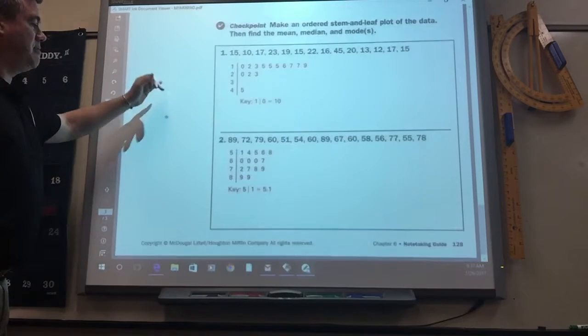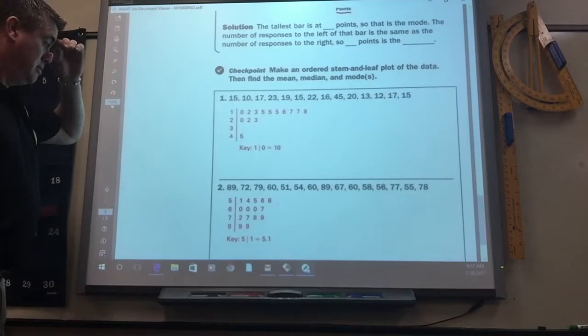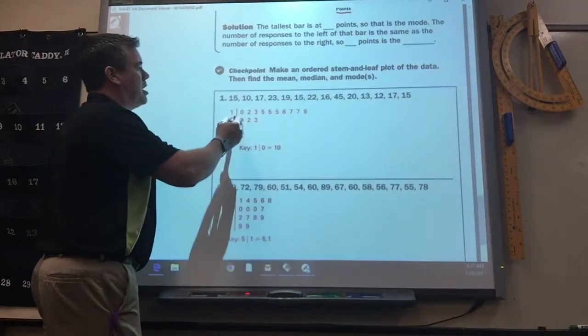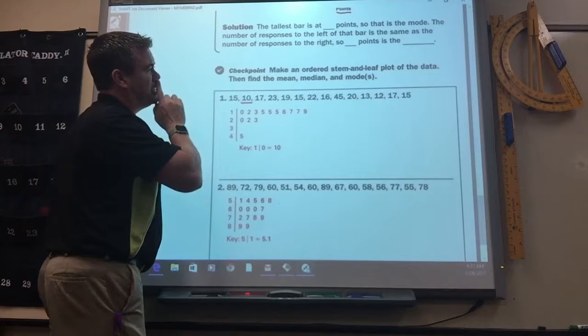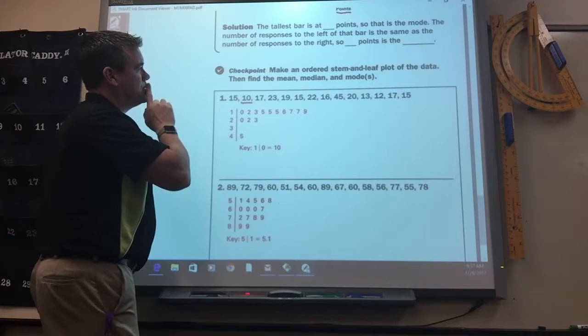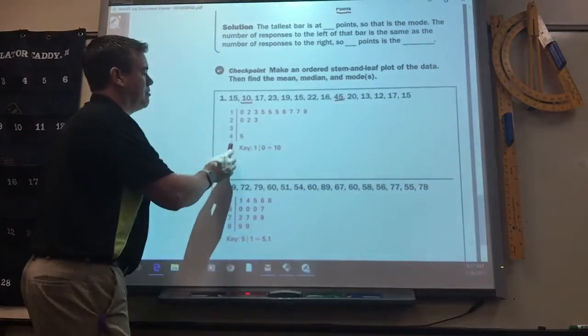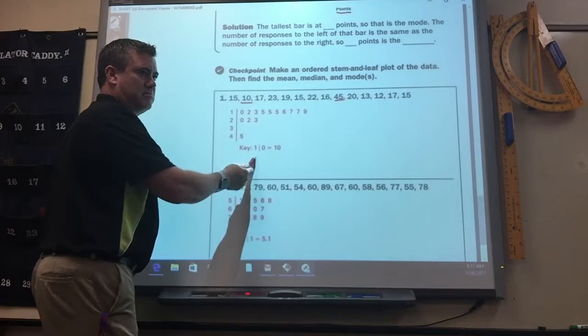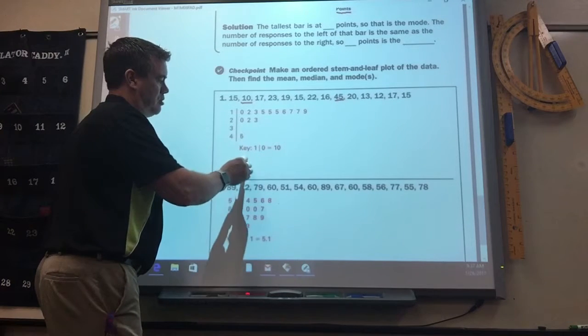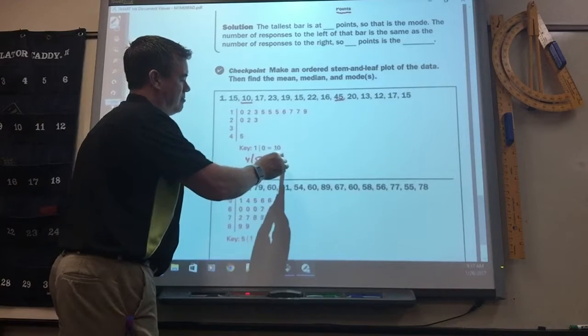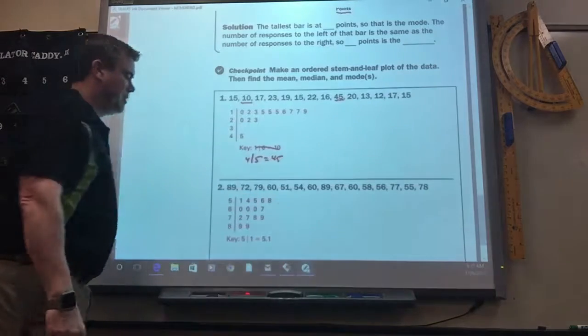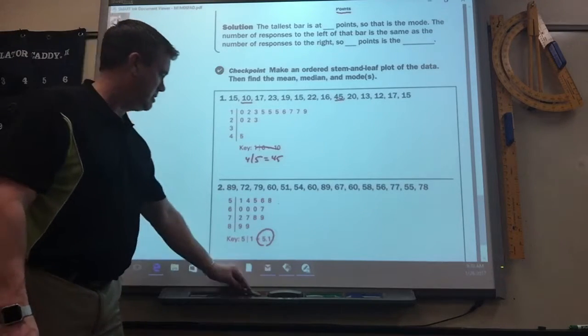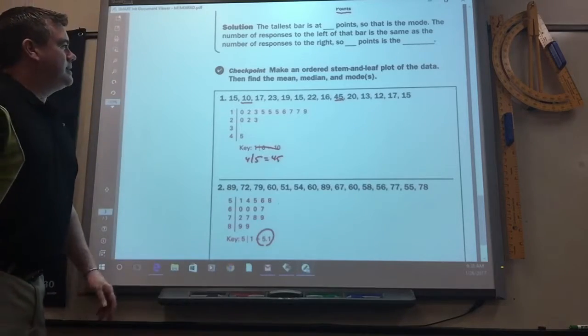Okay, so here they just give another couple examples. Well, they got an error here. I'm doing a stem and leaf plot. The smallest number is a ten. The biggest number is 45. So they went from one to four. Fill them in, and then they just put a key. Okay? One zero is ten. Or you could go four or five is 45. Whichever one you want to do. You already made an error. They put one is 5.1. It's not. It's 51.